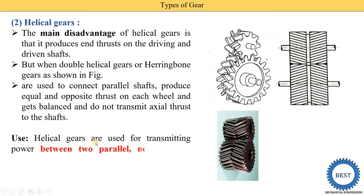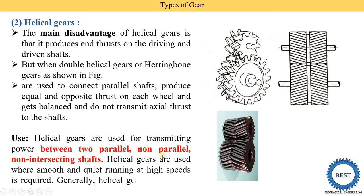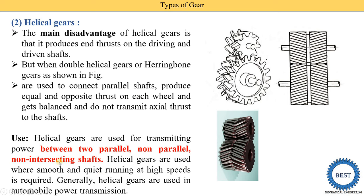Helical gears are used for transmitting power between two parallel, non-parallel, or non-intersecting shafts. When used in non-parallel conditions, the axis of the two shafts do not intersect with each other. Helical gears are used where smooth and quiet running at high speed is required. Generally, helical gears are used in automobile power transmissions.